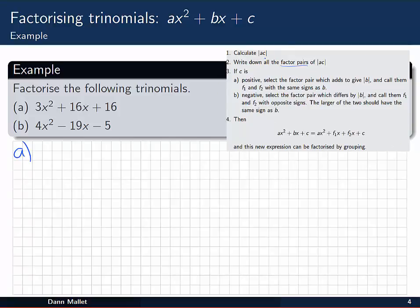The first thing we want to do is find out the absolute value of a times c. In the first example, that's going to be 3 by 16, which is 48. So |ac| = 48.